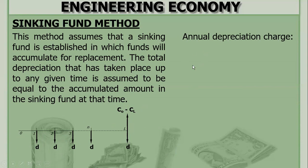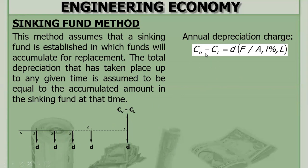To solve for D, use the formula in ordinary annuity — the formula of F. This is actually F, and our D is A. The formula of F is: F equals A times the compound amount factor, like F given A, I percent, L. Note that in annuities the period is N, but in the case of depreciation it is L — the life.